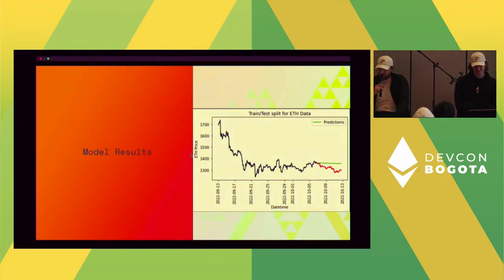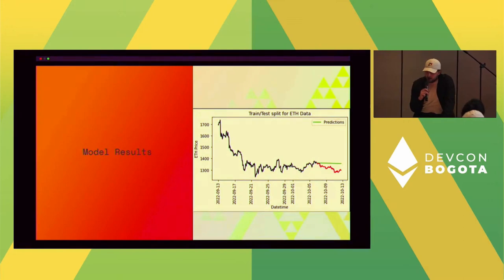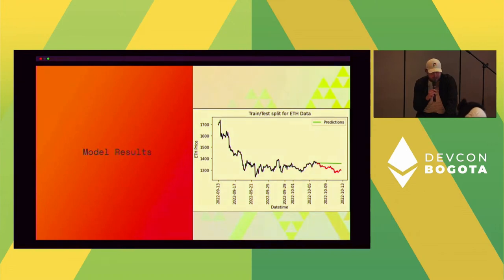Here are the results. The red is the test set. The prediction basically says it's trading sideways — maybe going down about ten dollars. If anyone knows the crab strategy on Squeeth, this would be a good time to use it.